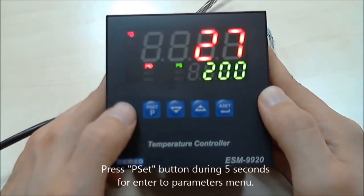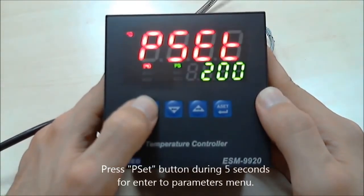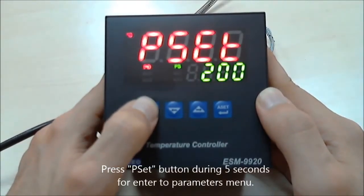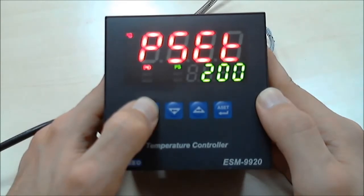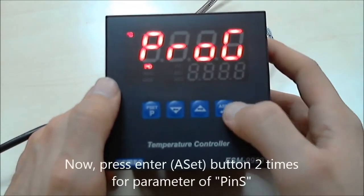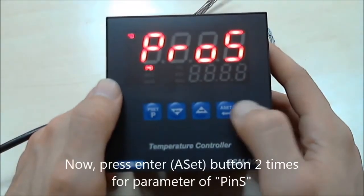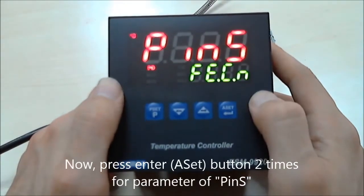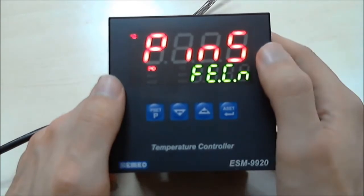Press Program Set button for 5 seconds. Then press Enter button. Press Enter button again. And then you'll reach the input selection parameter.